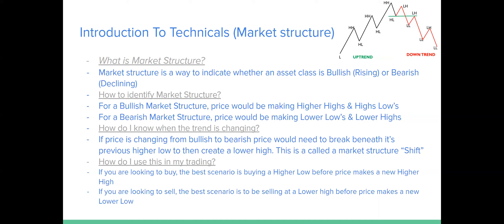How to identify market structure: for a bullish market structure, price would be making higher highs and higher lows — that's called an uptrend. We identify it by seeing if the market is making higher highs (HH) and higher lows. If price is continuously going up, making higher highs above the old high, then we call it a retracement — price breathes out and breathes back in, making a higher low — and then price breathes out again to make a new higher high.